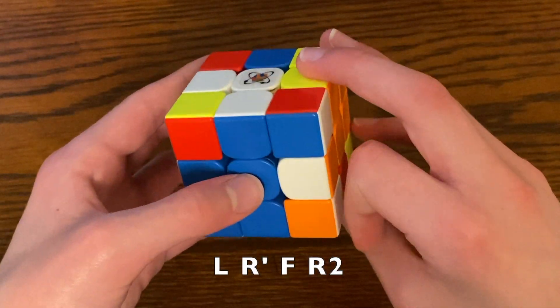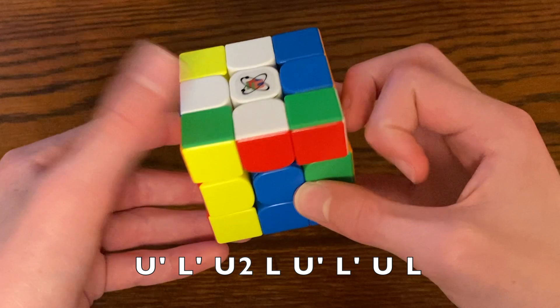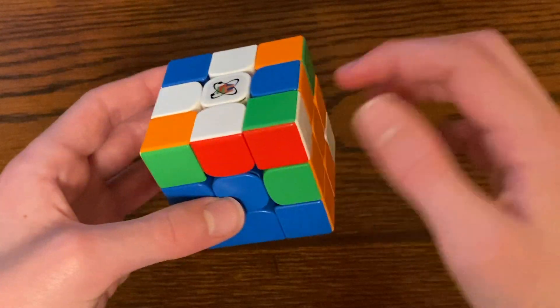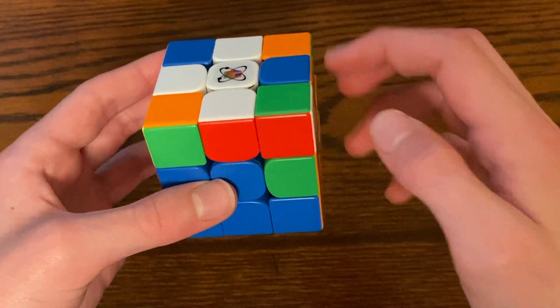So L, R'F, R2, then this pair. And then I see that the edge is right here, so I'm going to use keyhole to insert it.